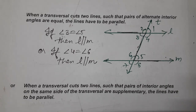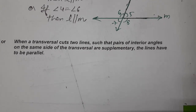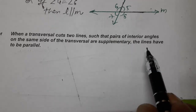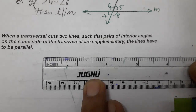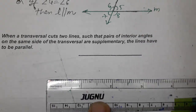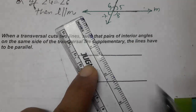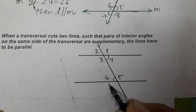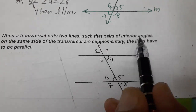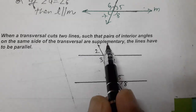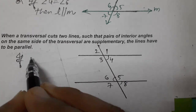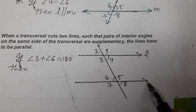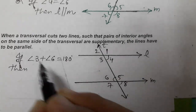The last one — the third case: when a transversal intersects two lines such that a pair of interior angles on the same side of the transversal are supplementary, the lines are parallel. Let's make two lines and a transversal, and number the angles one through eight. If angle three plus angle six equals 180 degrees, then the two lines are said to be parallel, so L is parallel to M.